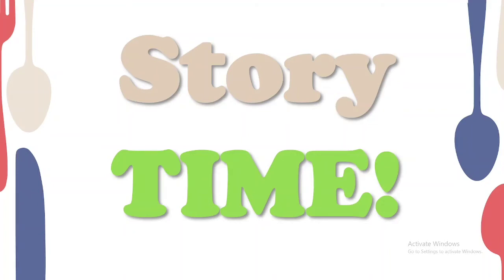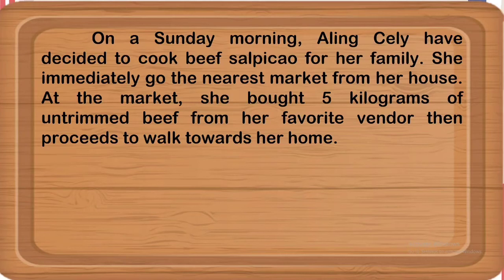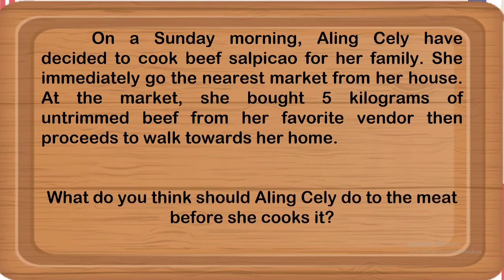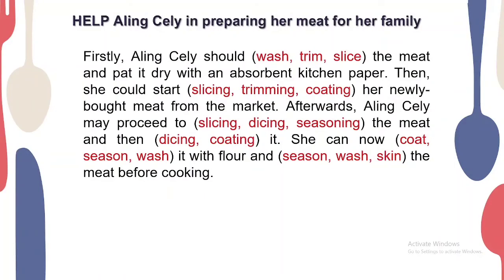To further understand our lesson, let us help Aling Selie. On a Sunday morning, Aling Selie decided to cook beef salpicao for her family. She went to the nearest market and bought five kilograms of unclean beef from her favorite vendor. The question is: what should Aling Selie do to the meat before she cooks it, using our basic preparation methods?